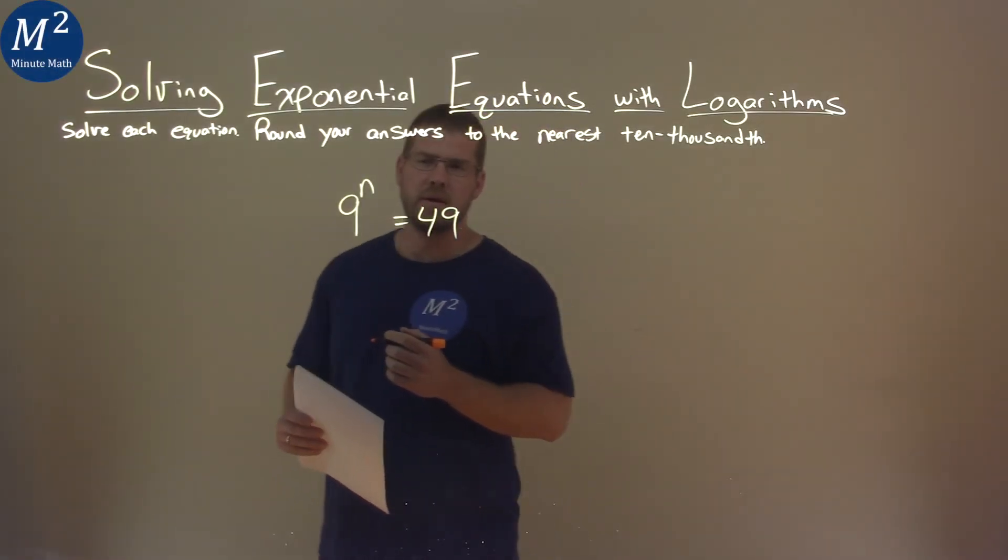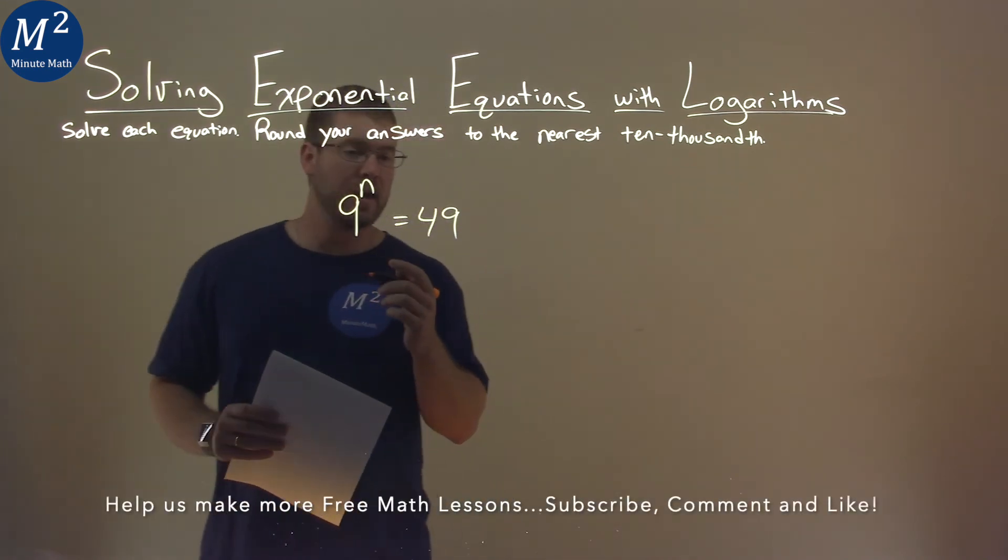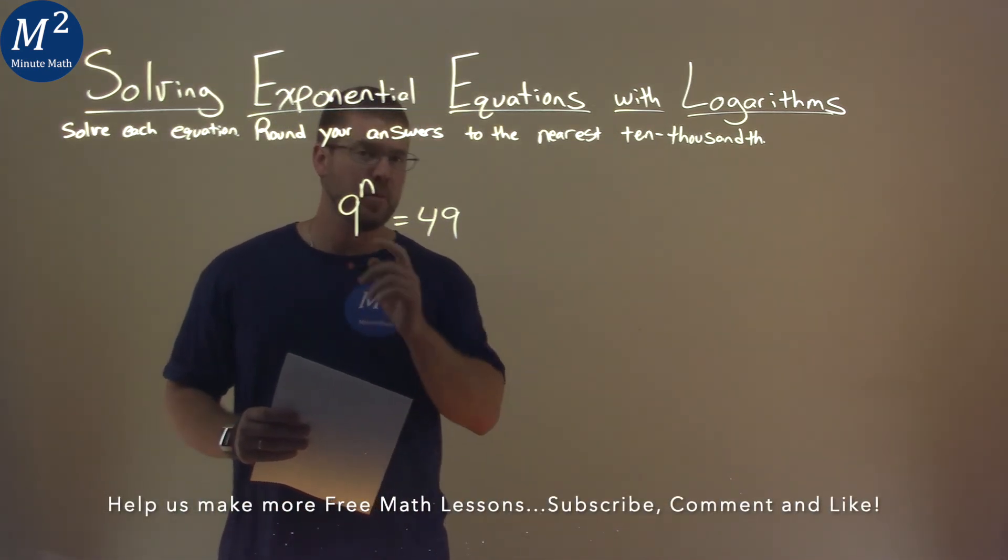We're given this problem right here, 9 to the power of n is equal to 49, and we need to solve this.